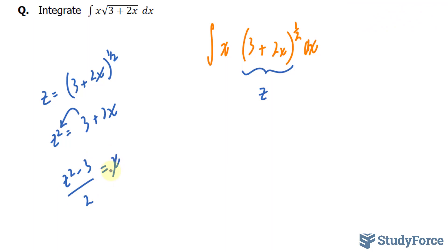So what I'll do is replace this x with this expression and this whole factor with z. Giving us the integral of (z to the power of 2 minus 3) over 2. This has become z, and here we have dx.